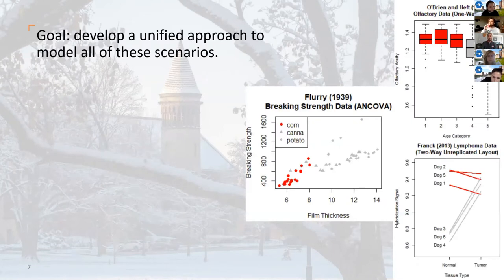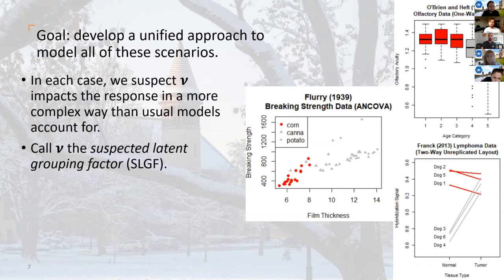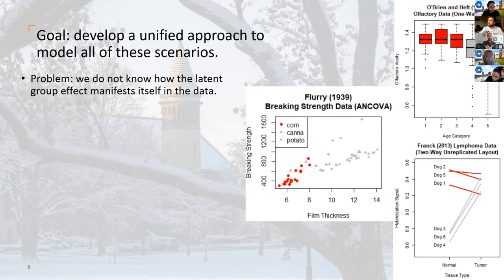So what my R package SLGF does is unify all these scenarios. The common thread through all these data sets is that we have a categorical predictor — color-coded red and gray here — whose levels we can divide into two groups that behave differently. We call that the suspected latent grouping factor — that's what SLGF stands for. The suspected latent grouping factor is that categorical predictor where we can partition its levels into two groups that behave differently, and we model them accordingly.